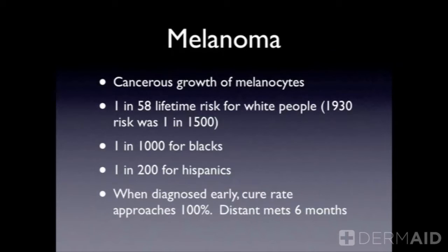The risk is 1 in 1,000 for African-Americans — if you have dark skin, you have natural sun protection, so your risk for melanoma is lower. It's 1 in 200 for Hispanics. Our culture of sun-seeking and the use of tanning beds has greatly increased our risk for melanoma. When diagnosed early, the cure rate approaches 100% — that's why so much information is put into early detection. Once you have distant metastasis, also known as mets, your survival is about six to nine months.